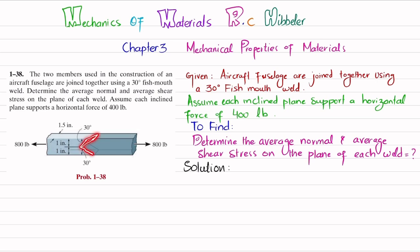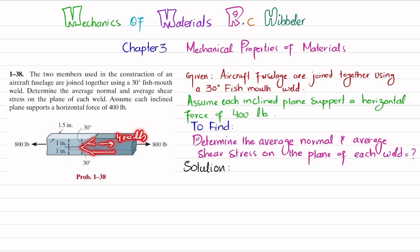You can see these are the two parts joined together by this 30-degree fish mouth weld, and there is an 800-pound load applied. It is given that each inclined plane supports a horizontal force — this horizontal face supports 400 pounds and this one also supports 400 pounds, making a total of 800 pounds. We have to determine the normal stress and average shear stress on this plane.